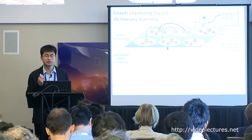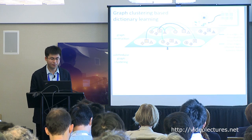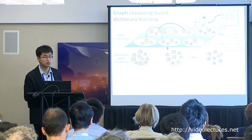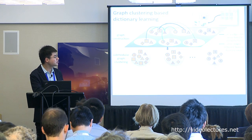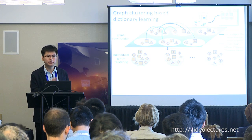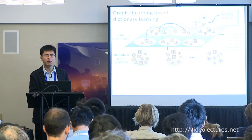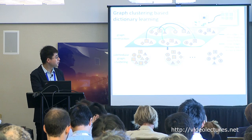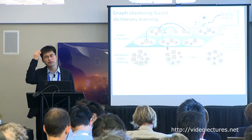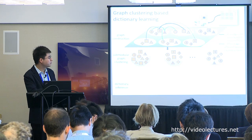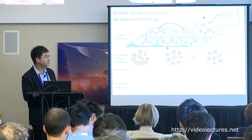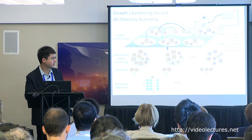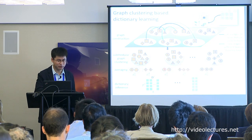We then apply submodular graph clustering with a constraint requiring each cluster to have different types of datasets and a uniform distribution of labeled data. Based on these clusters, we formulate the dictionary. Please refer to the paper for more details.